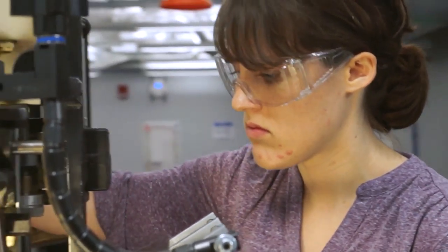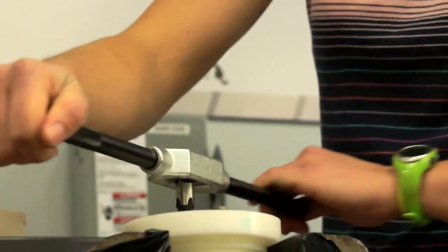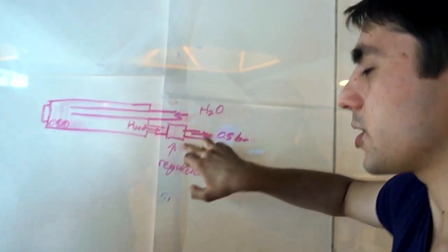We have access to a bandsaw, to a mill, to a lathe. All of these things you need to rapid prototype. You can make the argument and just scale it up with a regulator.